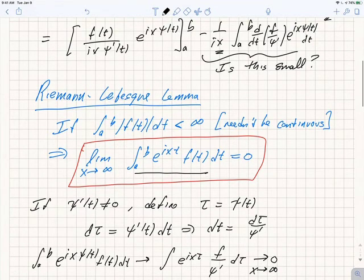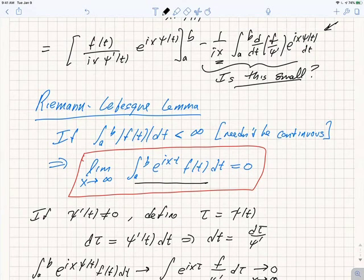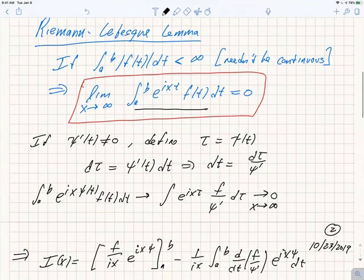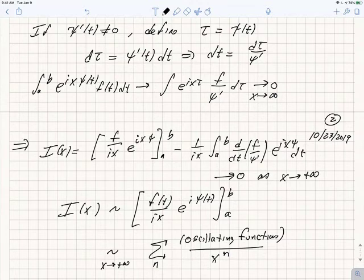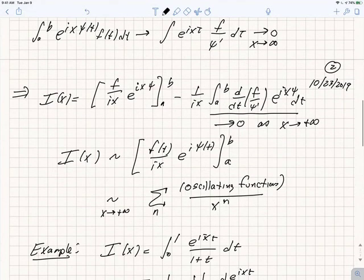So, if that's true, then that means that the second term is small compared to the first term, and here we just sort of do a change of variables to show that that's correct, and what we would expect then is we could continue, we could do integration by parts on this next term,